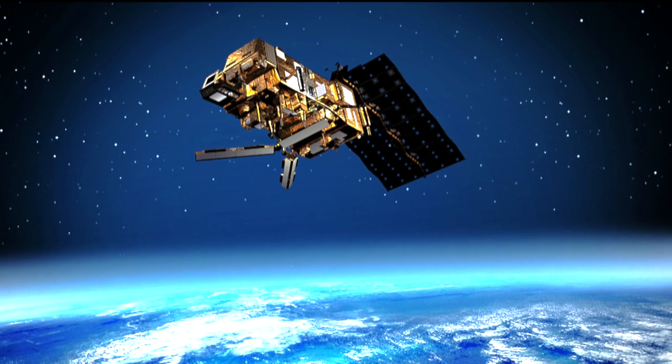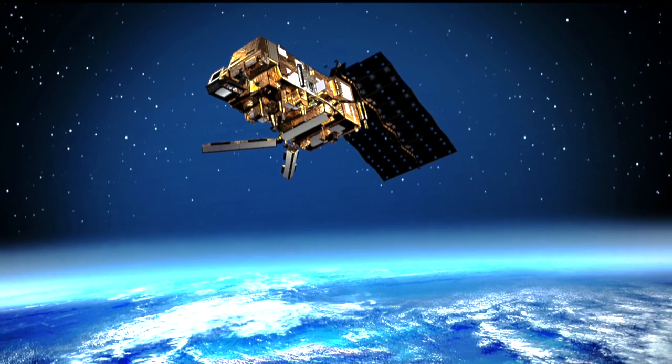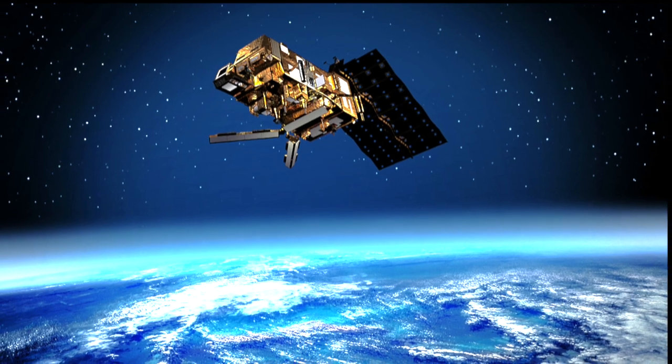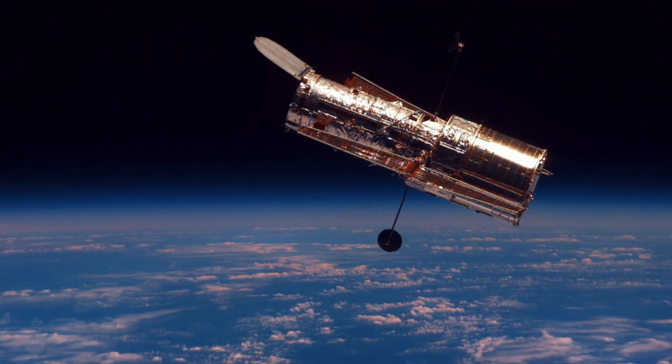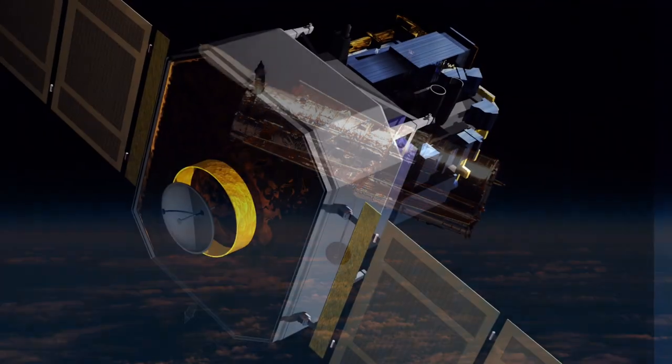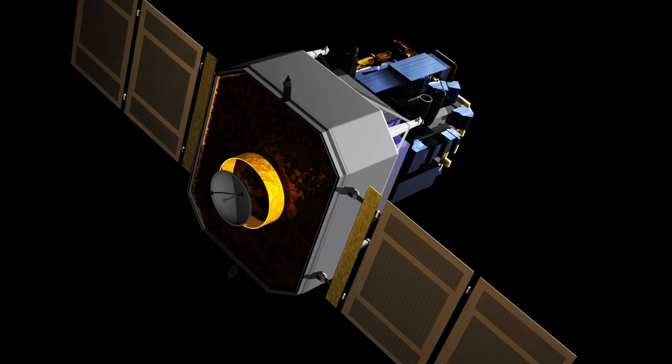Some examples include Earth-pointing spacecraft such as communications, broadcast, and weather satellites. There are inertial pointing craft like the Hubble Space Telescope, and then we have sun-pointing satellites such as the Solar and Heliospheric Observatory.